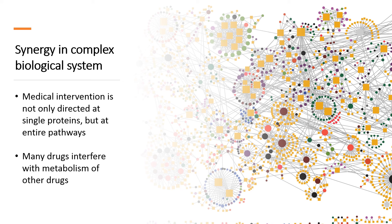Thus, a substance B that slows down clearance of an active drug A, by blocking metabolizing enzymes or excretion, may lead to a higher effective concentration of A that remains in the body for a longer time. As a result, one would notice a greater effect of drug A when given together with B, although the two drugs have completely different modes of action. While the combination of these two drugs would appear synergistic in practical application, it is not synergistic by the strict definition.